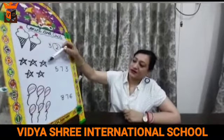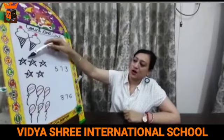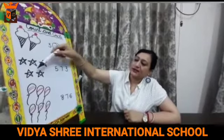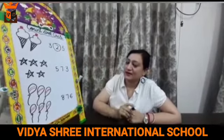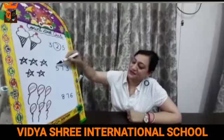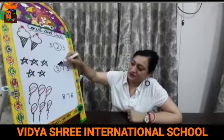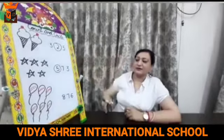There are how many stars? Let's count. 1, 2, 3, 4, 5. And which is the correct number we have to circle? It's 5. We have to circle the correct number 5.